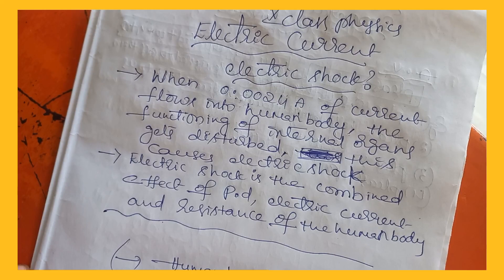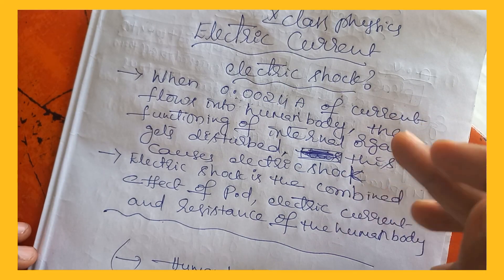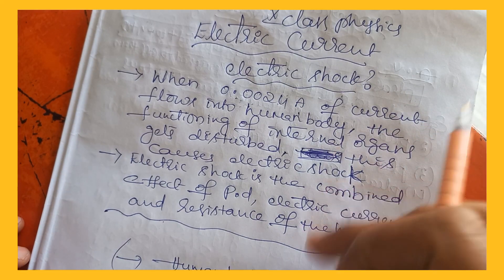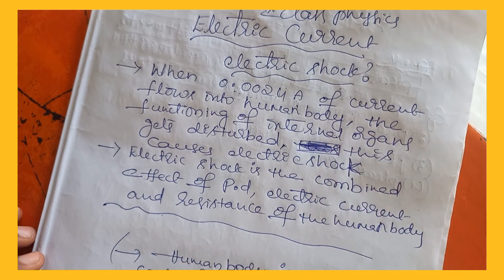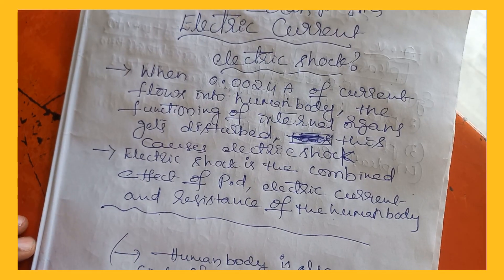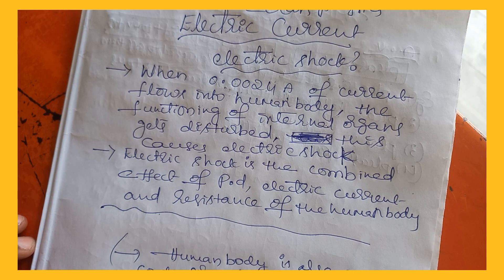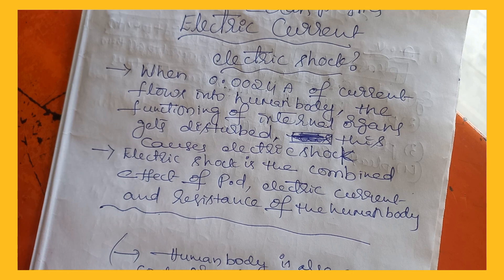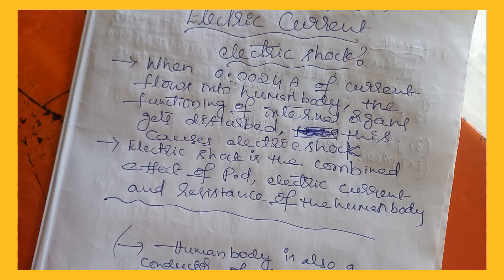So, to summarize: electric shock occurs when 0.0024 amperes of current flows into the human body and the functioning of internal organs gets disturbed, which causes electric shock.